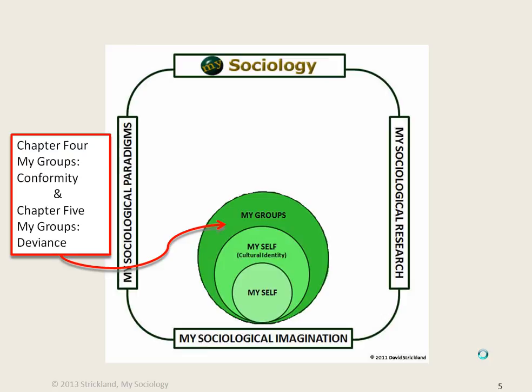The next two chapters, chapter 4 and chapter 5, represent a transition from the micro level approach to a macro approach with the discussion of groups. Groups in general are discussed, and the influence of groups is a topic of these chapters, both with regards to conformity and with deviance.